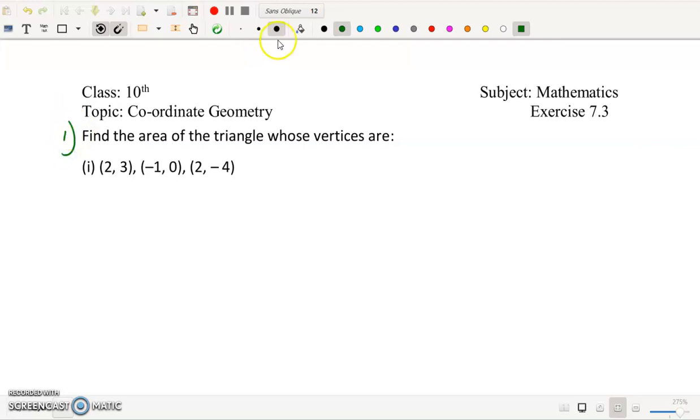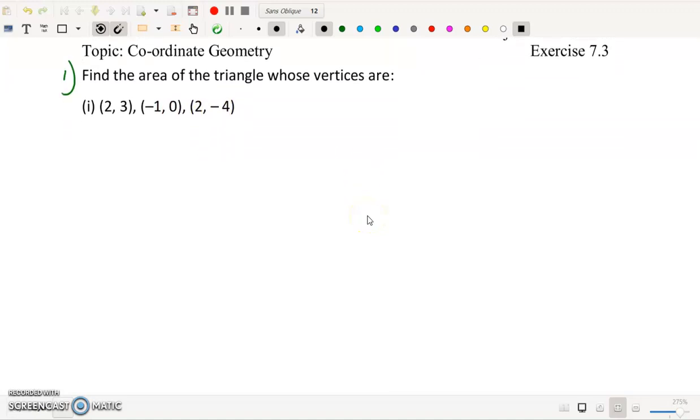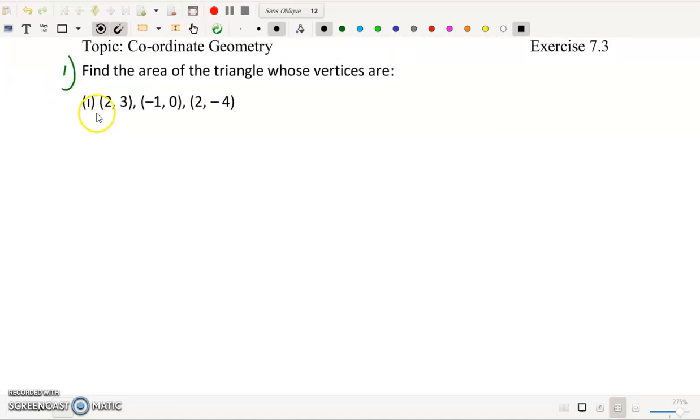So first problem is find the area of a triangle whose vertices are (2,3), (-1,0), and (2,-4). So it is a direct question. So this is x1, this is y1, this is x2, y2, this is x3 and this is y3.